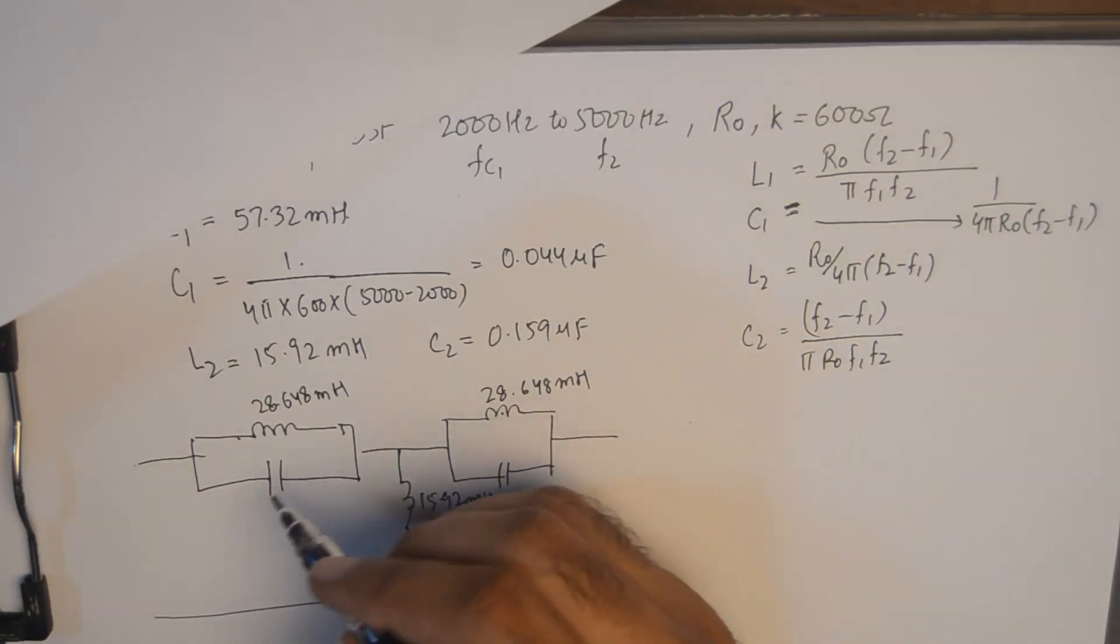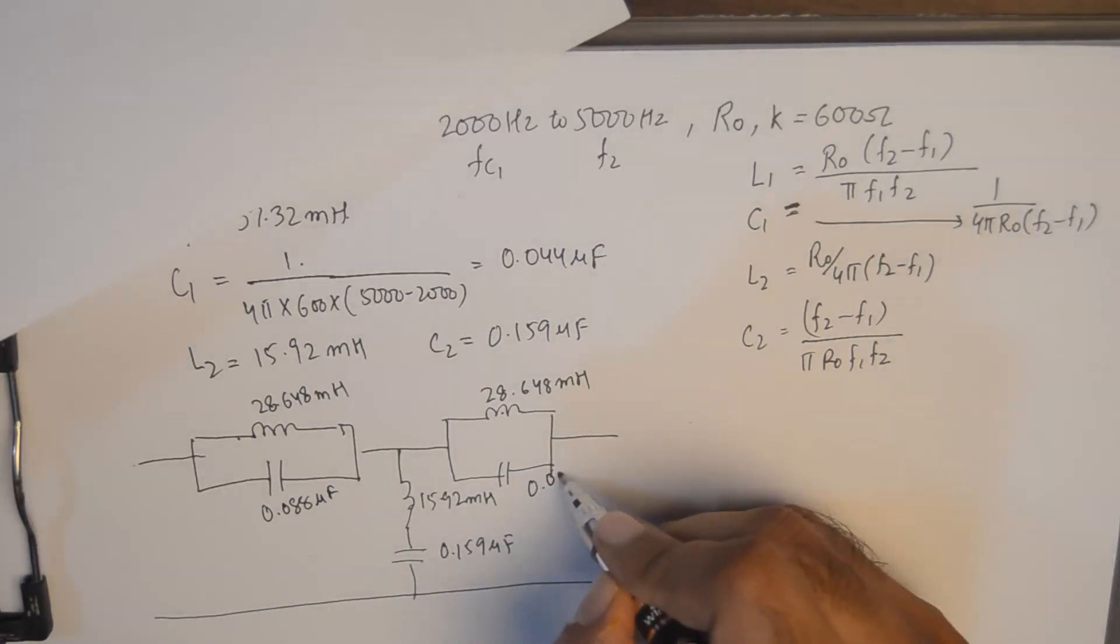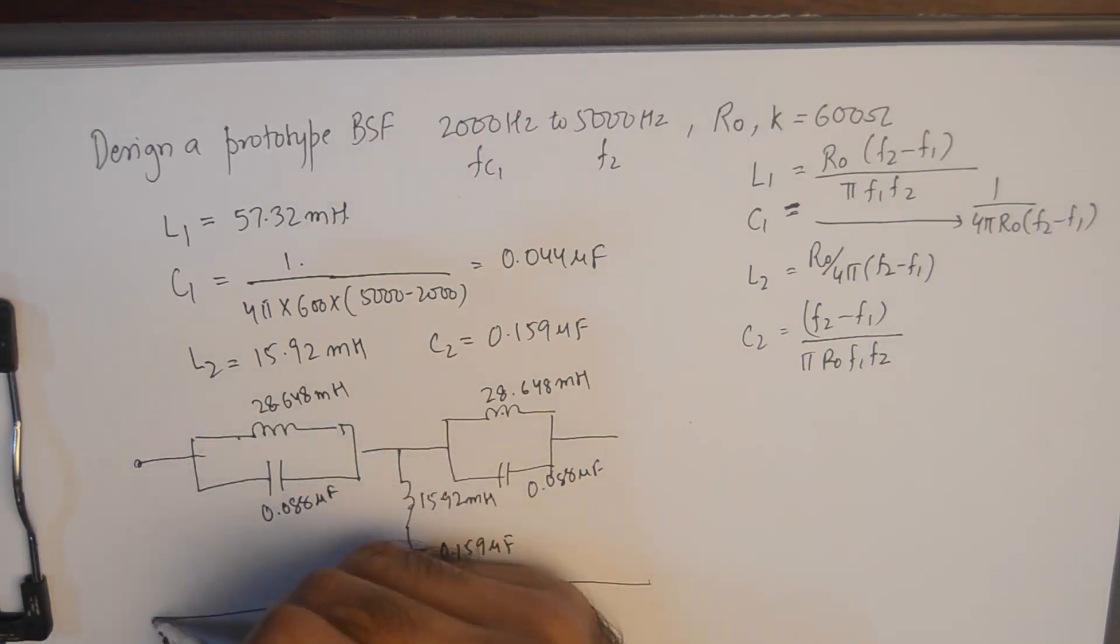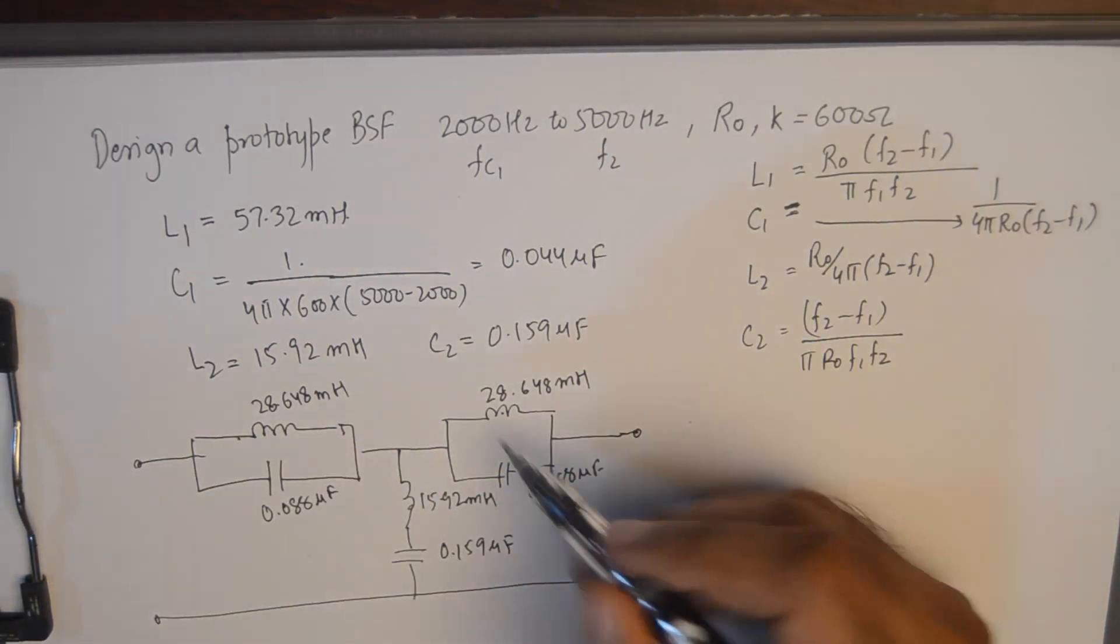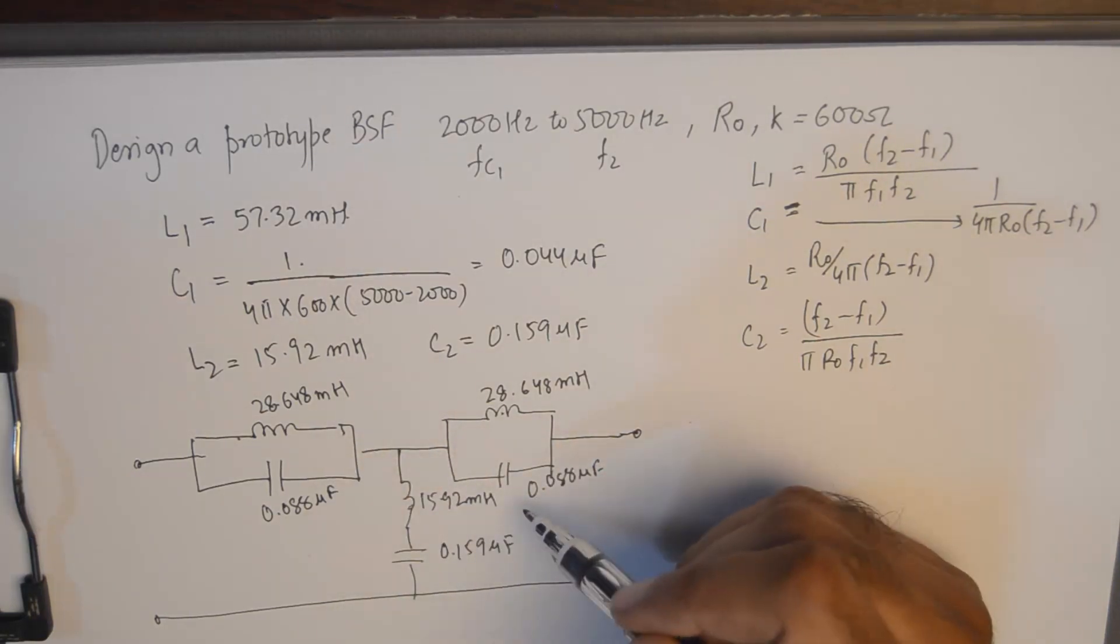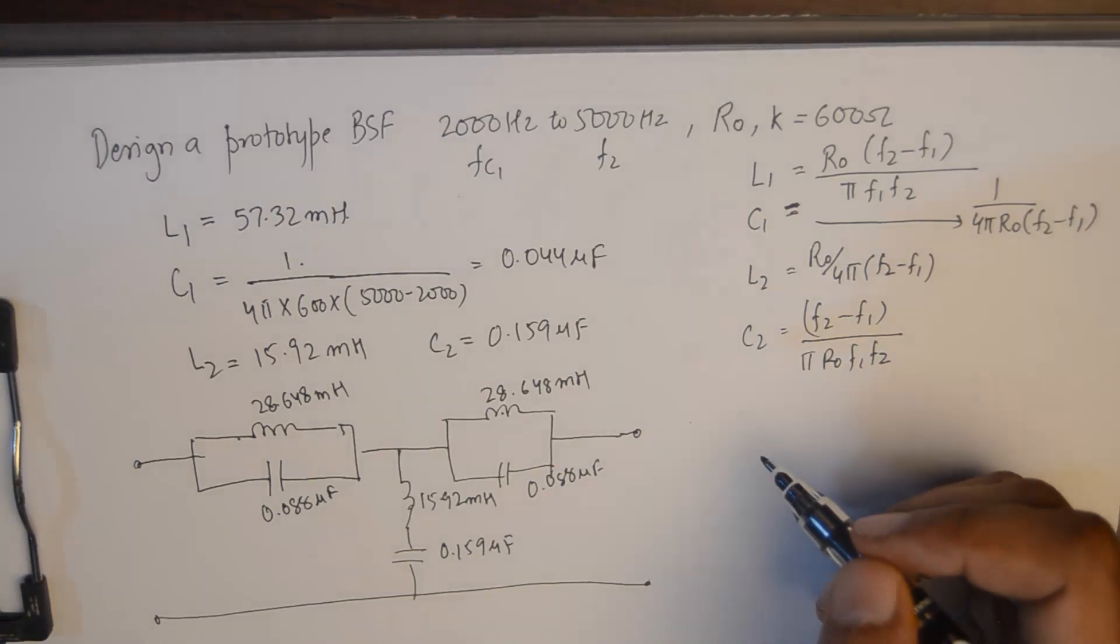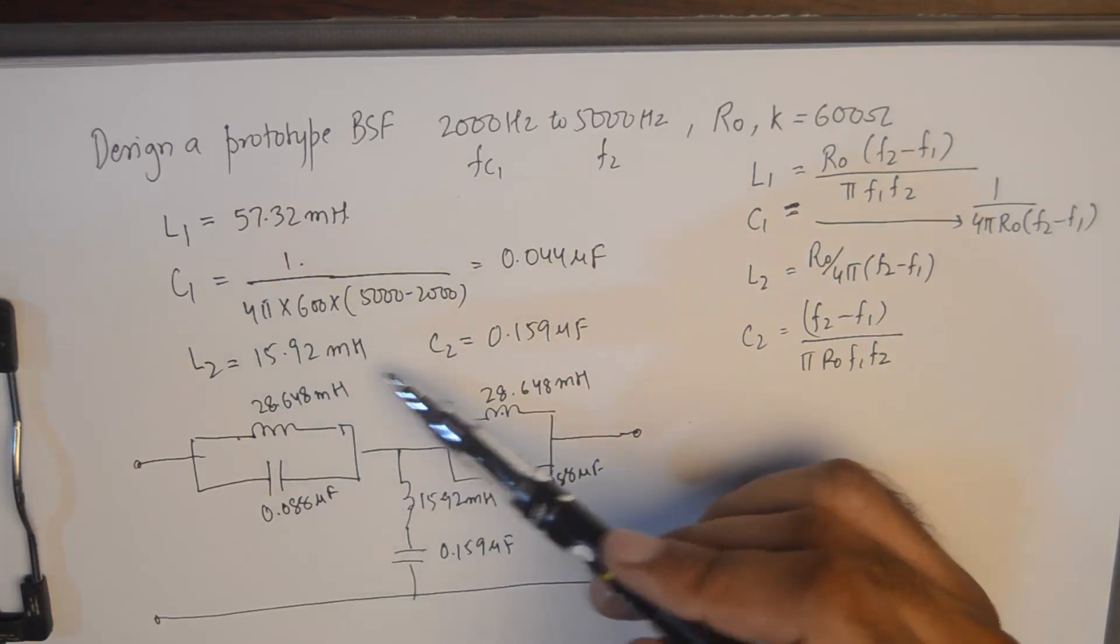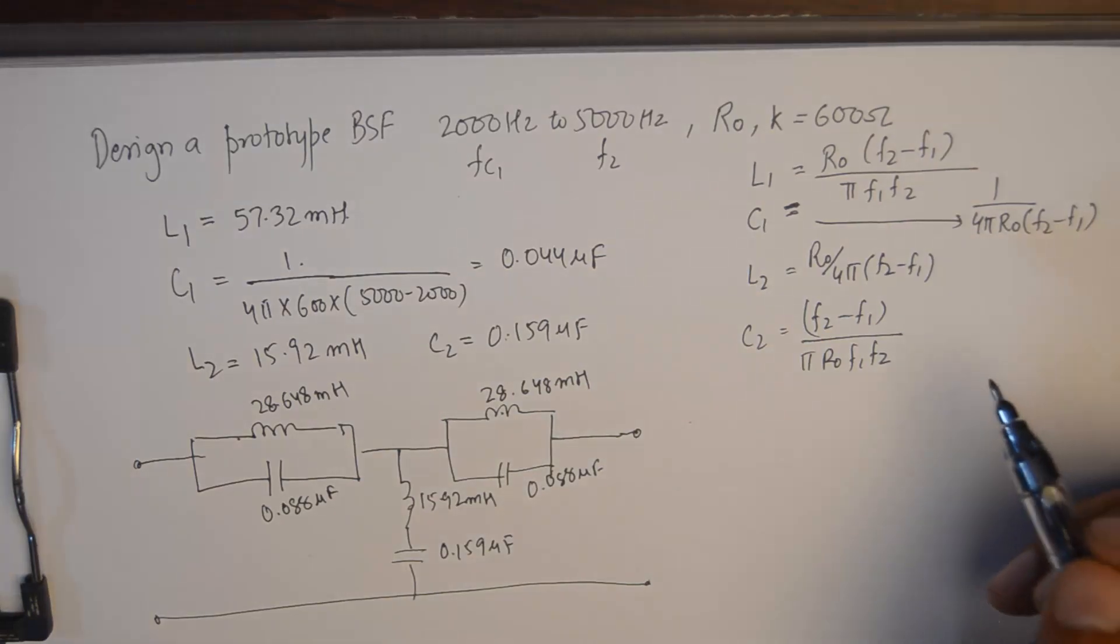So this will be 0.088 microfarad and 0.088 microfarad here. So a little bit of care is needed here to put these values, and similarly for the PI configuration in the shunt arm, we need to double the value of L2 and put it there and we need to half the value of C2 and put in the shunt arm.